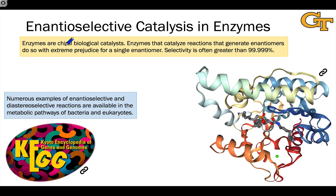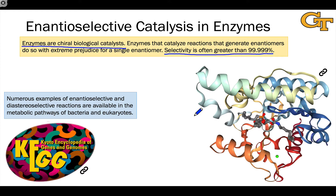Nature is exceptional at enantioselective catalysis — so amazing that biochemists don't even worry about stereoselectivity. In an enzymatic context, selectivity is very commonly greater than 99.999%. The reason is that enzymes are not only chiral biological catalysts, but create extremely selective pockets for a single enantiomer of substrate or product. Only one enantiomer of a possible product, or only one enantiomer of substrate, fits into the enzyme active site pocket. So enzymes can distinguish between enantiotopic groups, form a single stereoisomer selectively, and react with a single stereoisomer in a pair selectively. Numerous examples exist in the metabolic pathways of living systems.